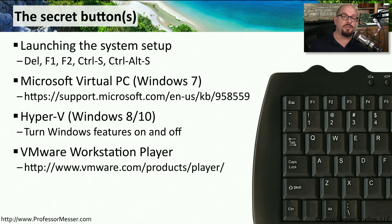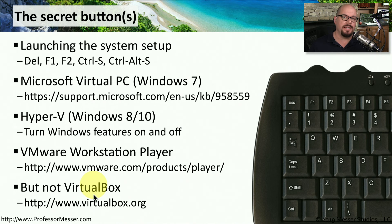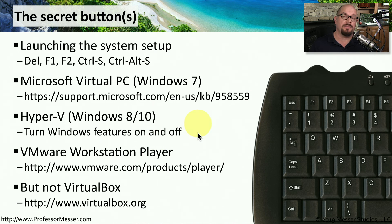If you wanted to use a third-party virtualization system, you could use VMware Workstation Player — a virtualization system for Windows. There's also third-party virtualization software from Oracle called VirtualBox. However, VirtualBox does not provide that BIOS configuration setting; you would need to use software from Microsoft or VMware to have a virtual system with access to the BIOS configuration.